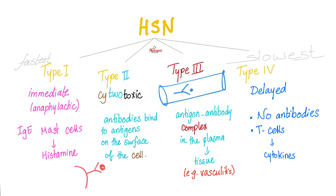But type 4 has nothing to do with antibodies. Type 4 has nothing to do with the humoral immune system. Type 4 is about T lymphocytes — cell-mediated immunity, no antibodies. The T lymphocytes are sophisticated; they communicate with each other via cytokines, which include the interleukins — the internet of the leukocytes. This is also the story of making a granuloma, and this takes time.